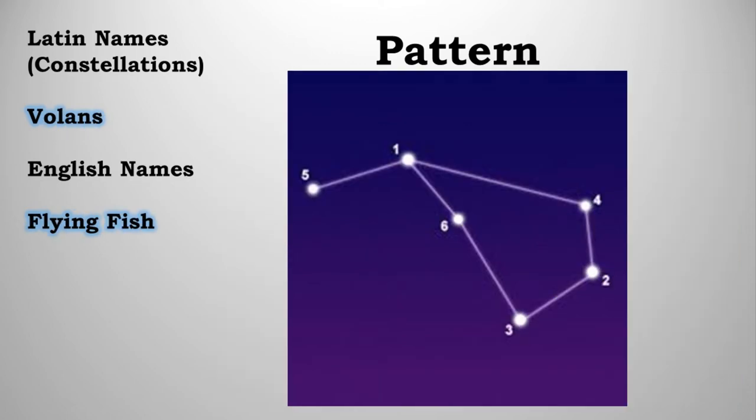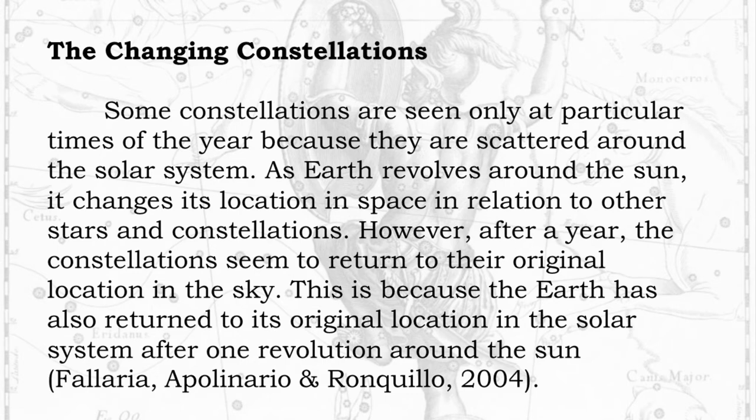The Changing Constellations. Some constellations are seen only at particular times of the year because they are scattered around the solar system. As Earth revolves around the Sun, it changes its location in space in relation to other stars and constellations. However, after a year, the constellations seem to return to their original location in the sky. This is because the Earth has also returned to its original location in the solar system after one revolution around the Sun.